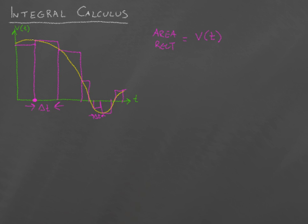So, if this is t, the height of that is the velocity. The width is delta t. And we hopefully remember that the area of a rectangle is the height times the width.